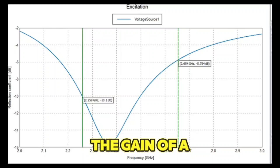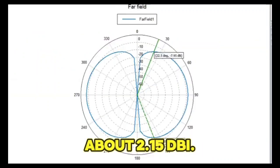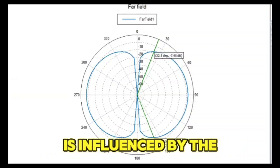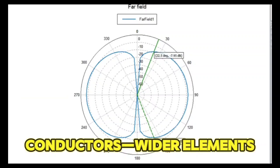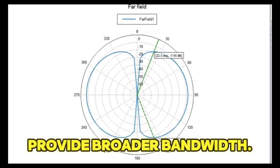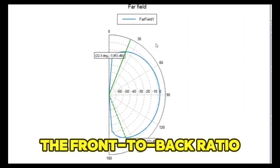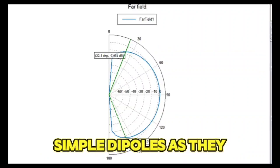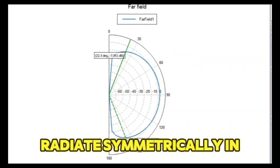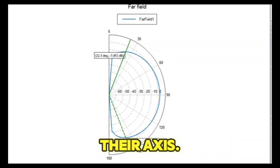The gain of a half-wave dipole in free space is about 2.15 dBi. The bandwidth of a dipole is influenced by the diameter of the conductors—wider elements provide broader bandwidth. The front-to-back ratio is not applicable in simple dipoles as they radiate symmetrically in both directions along their axis.